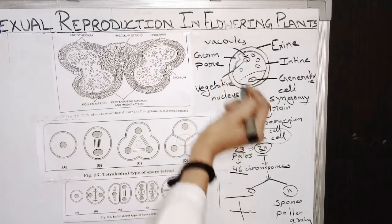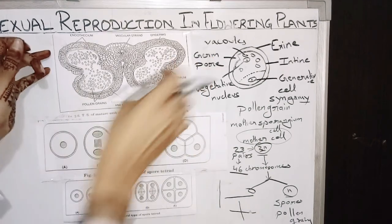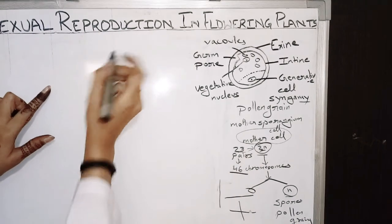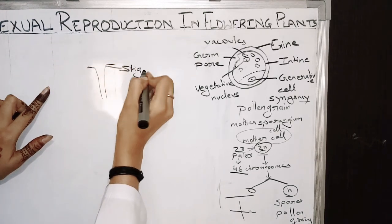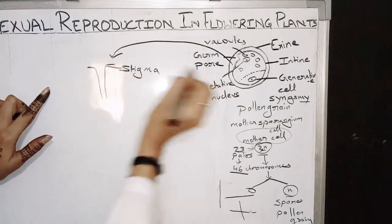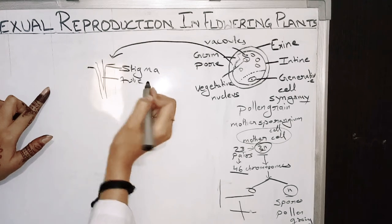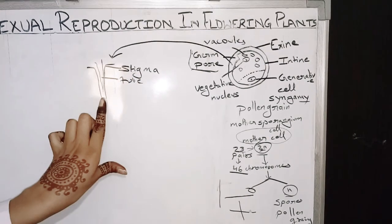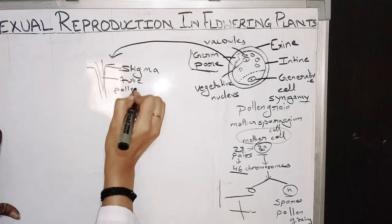So it lands on the stigma, transfers to the stigma and forms a tube — a tubular structure. From where does this tube form? This tube is formed from the germ pore. The germ pore forms a tubular structure which is called the pollen tube.